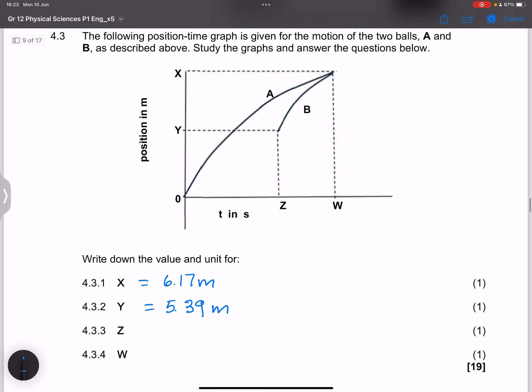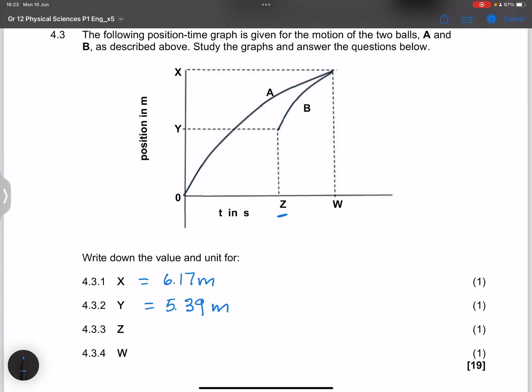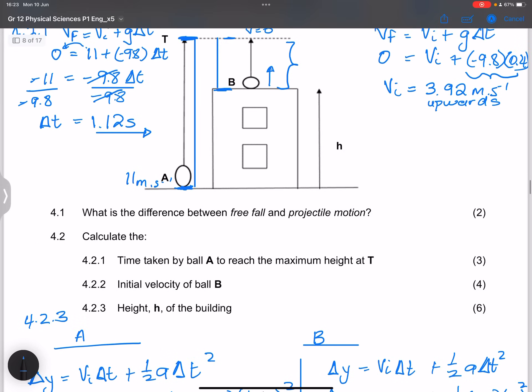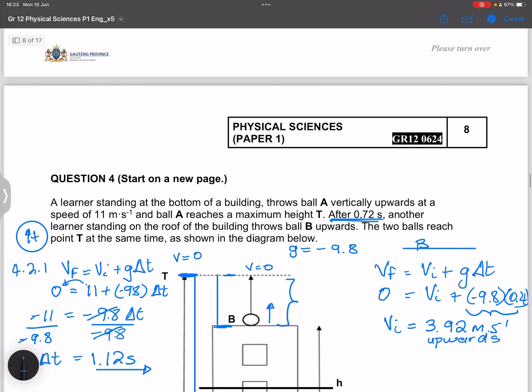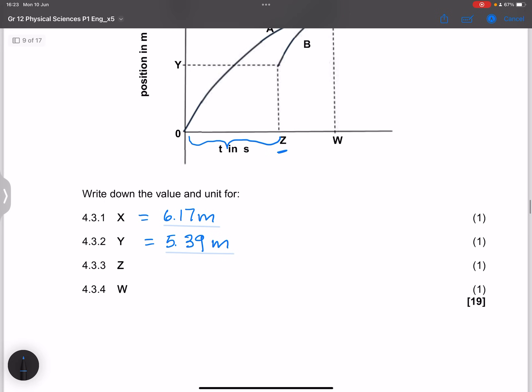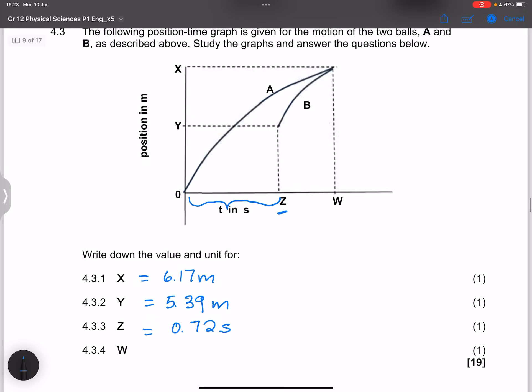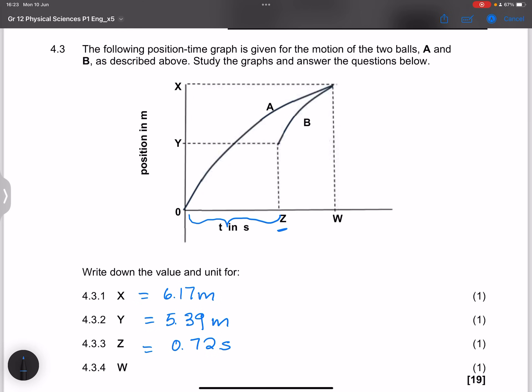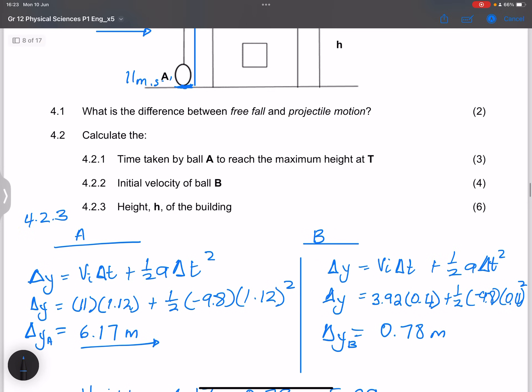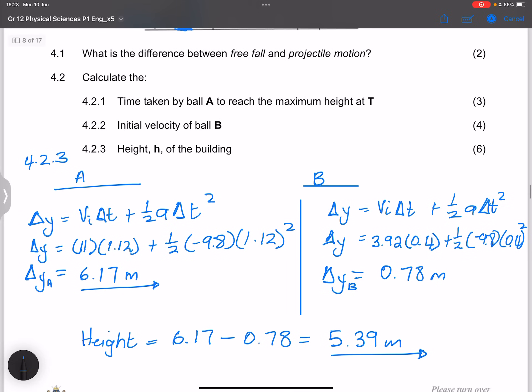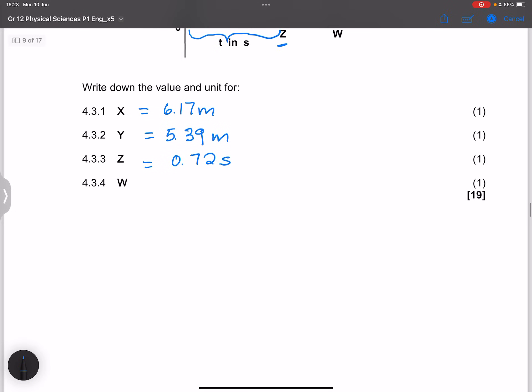And they said Z. So Z would be time. This is the time difference between when A was projected and B was projected. If you remember we said that time was actually 0.72 so that's the time delay at 0.72 seconds. And finally W, that's the total time of flight for ball A, in fact not the total time of flight rather but the total time until maximum height. That's 1.12, so that's 1.12 seconds.